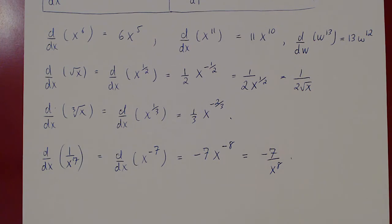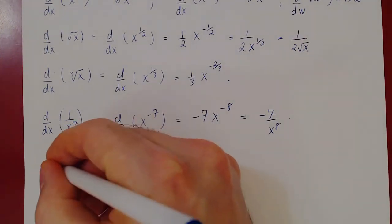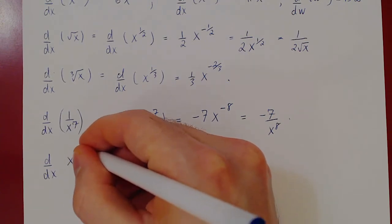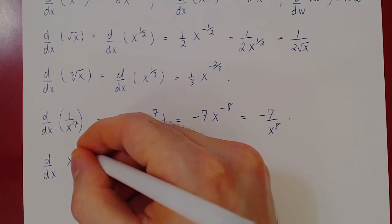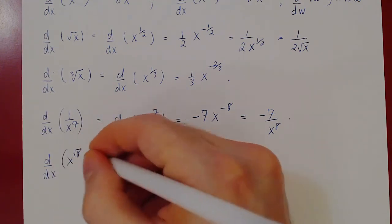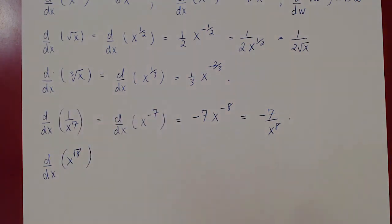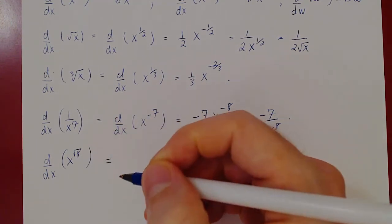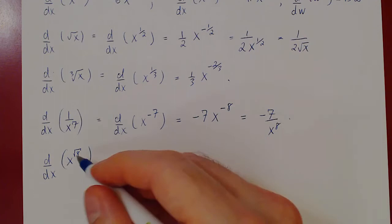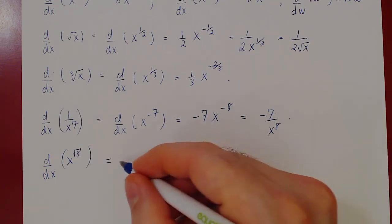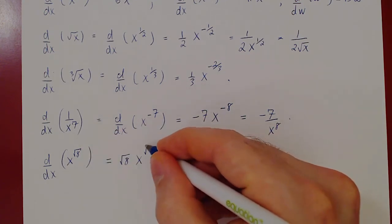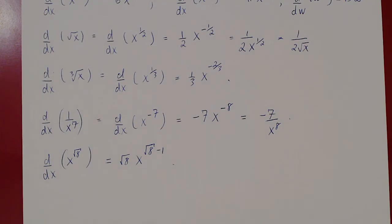One last example: the derivative of x to the root of 8. We have a stranger exponent, but root of 8 is a constant, so we can apply the power rule. Bring the exponent down — root of 8 times x to the root of 8 minus 1. And that's the power rule.